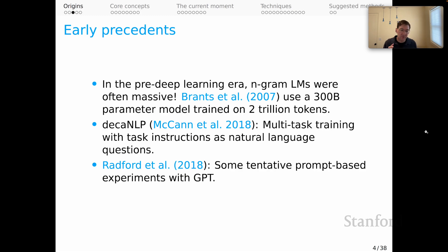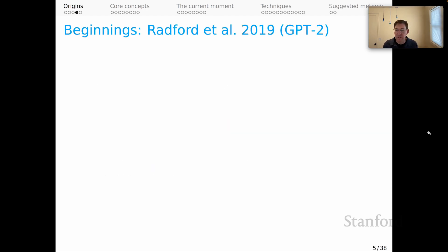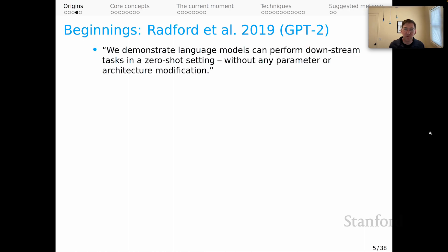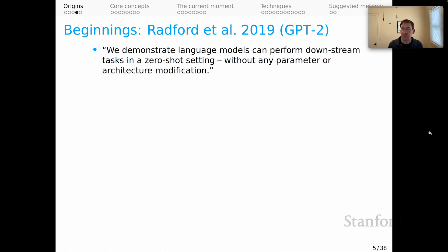It's also worth noting that in the GPT paper, Radford et al. 2018, you can find buried in there some tentative proposals to do prompt-based experiments with that model. But the real origins of the ideas, as far as I know, are Radford et al. 2019 — the GPT-2 paper. Let me show you some snippets from this paper; it's really inspiring how much they did. They say at the start: 'We demonstrate language models can perform downstream tasks in a zero-shot setting without any parameter or architecture modification.' There you see this idea of using frozen models, prompting them, and seeing if they will produce interesting behaviors.